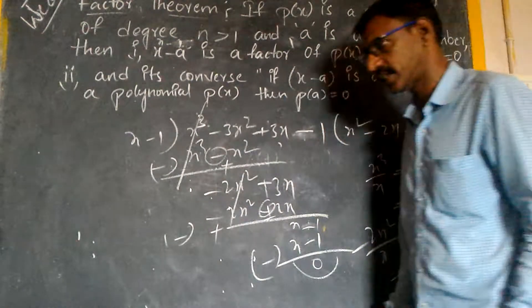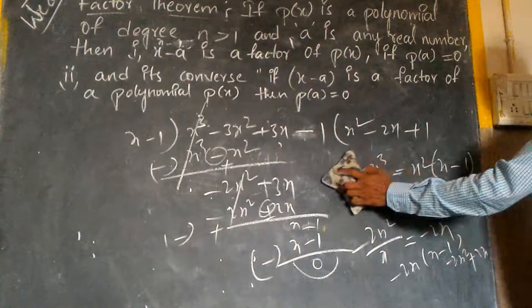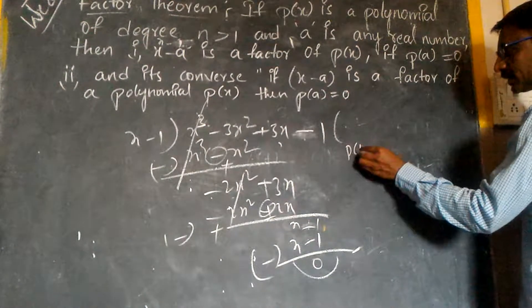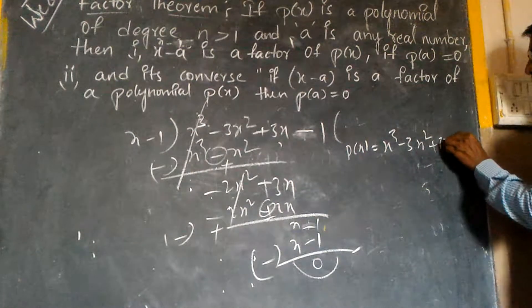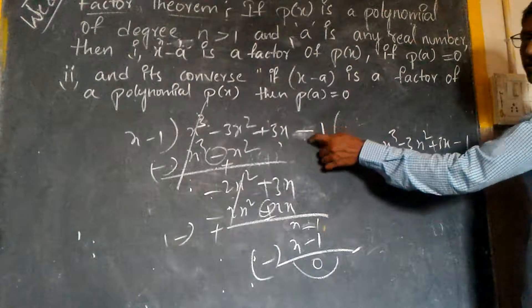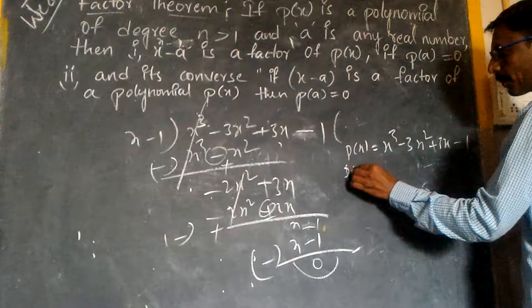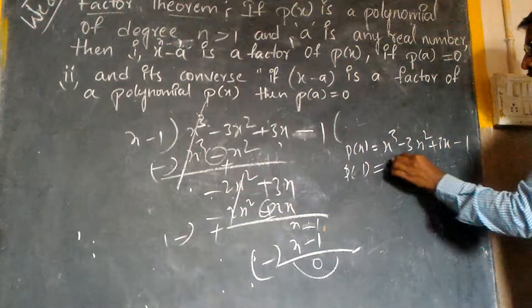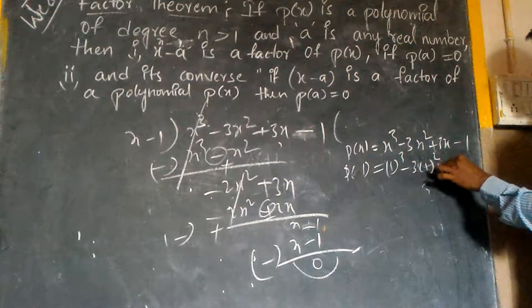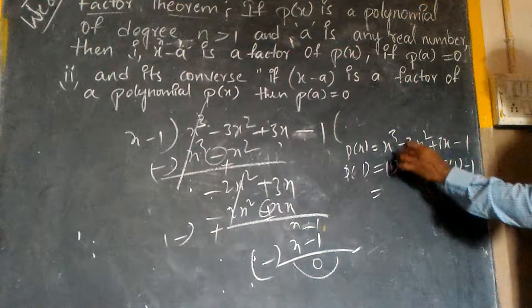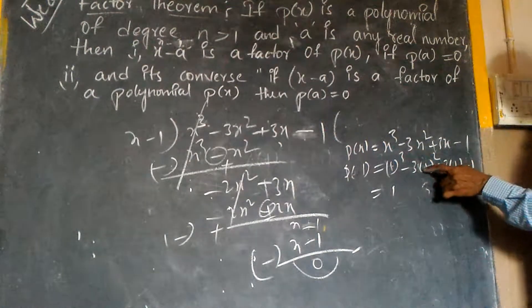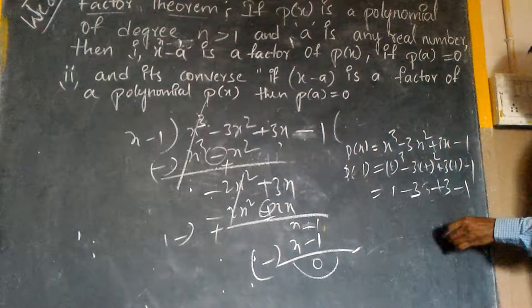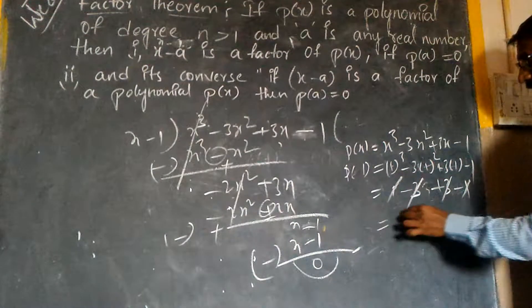By the factor theorem I would like to verify the remainder. The remainder must be 0. The polynomial p of x is equal to x cube minus 3x square plus 3x minus 1. Here I forgot to write minus 1 at the end. So p of 1 equals: 1 cube minus 3 into 1 square plus 3 into 1 minus 1. That is 1 minus 3 plus 3 minus 1, which equals 0.